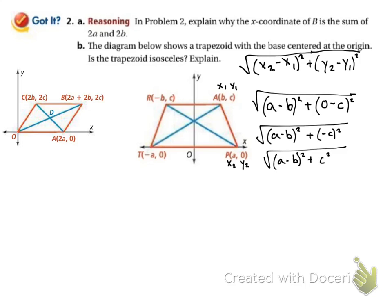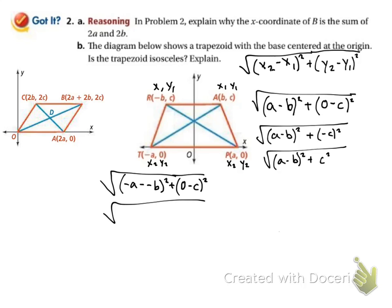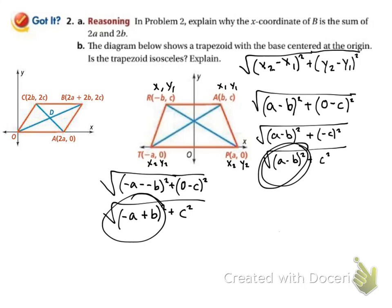Now I'll do the distance formula for the other side, labeling the top-two points the same way: x₂ is −a, minus x₁ which is −b, squared, plus y₂ which is 0, minus y₁ which is c, all under the square root. In the first parenthesis, two negatives make a plus: (−a − (−b)) = (−a + b). And that y-term again becomes c squared. So we need to know: is (a − b)² the same thing as (−a + b)²?